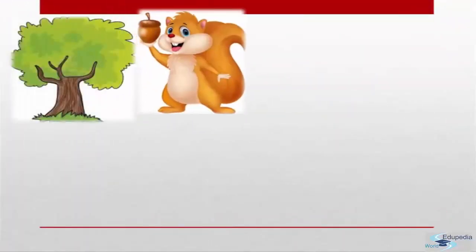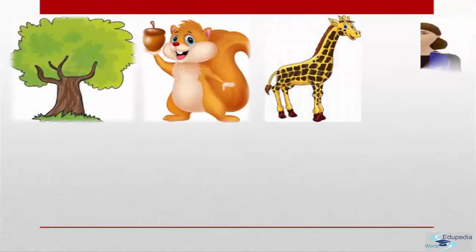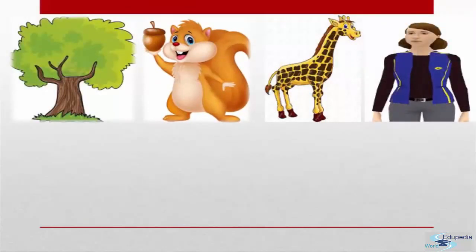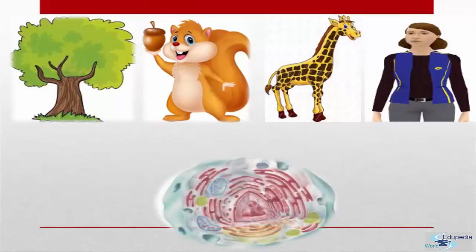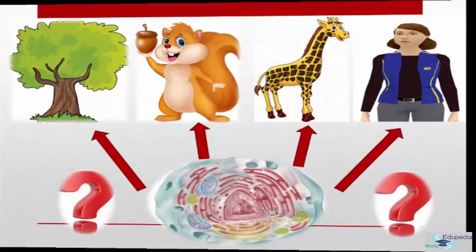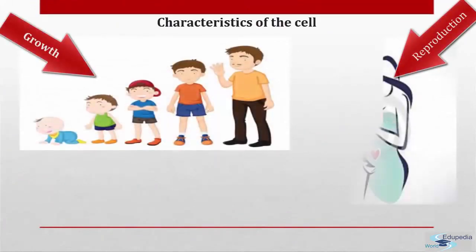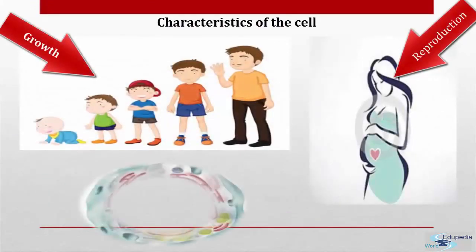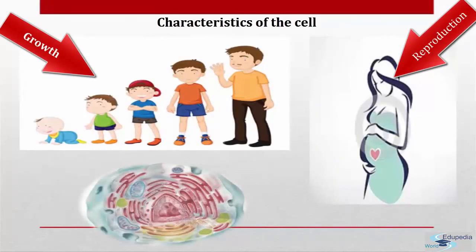All the living organisms, even the largest, start their life from a single cell. How does a single cell then go on to form such large organisms? Growth and reproduction are the characteristics of the cell, indeed of all the living organisms.